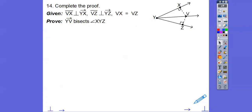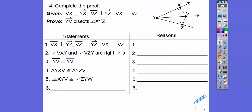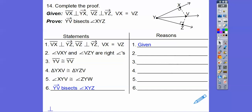Here we've got a proof — I know you guys love proofs. Free points! They're giving you a bunch of information, we just have to fill it in. It says VX is perpendicular to this ray, so there's a right angle there. VZ is perpendicular to this ray, so there's a right angle there. VX equals VZ, so this side equals this side. On proofs, the first statement and reason is always the given information, and that was all written right there.